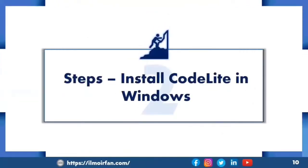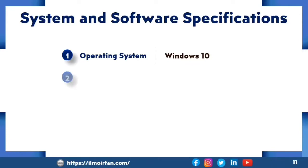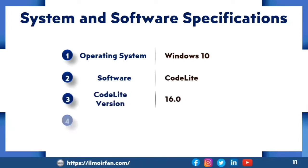In the next slide, I will present a simple and step-by-step process to install the latest version of CodeLight in Windows operating system. The system and software specifications are as follows: operating system is Windows 10, software is CodeLight version 16.0, and installation date is 28 August 2022.